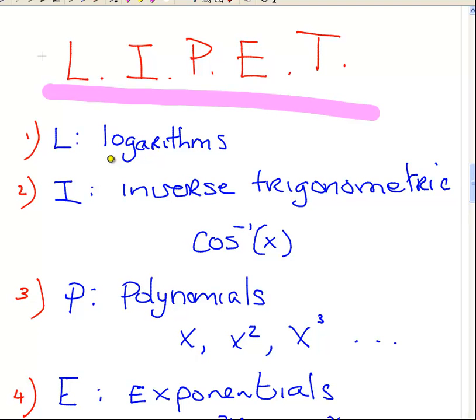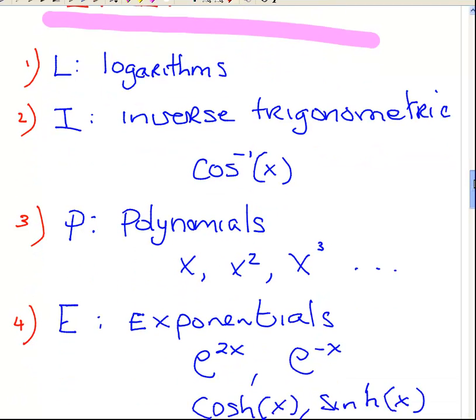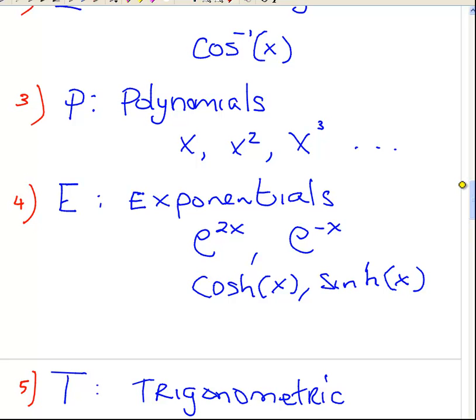Then, the inverse trigonometric. Something like cos to the minus one. After that, the order of precedence would be the polynomials, x, x squared, x cubed, and so on.